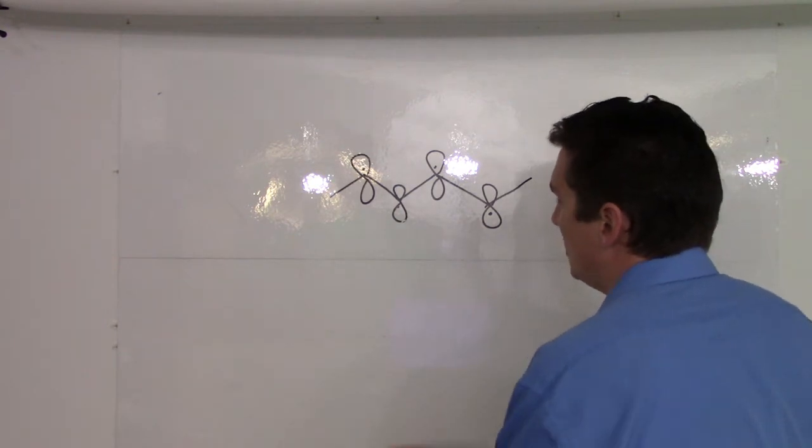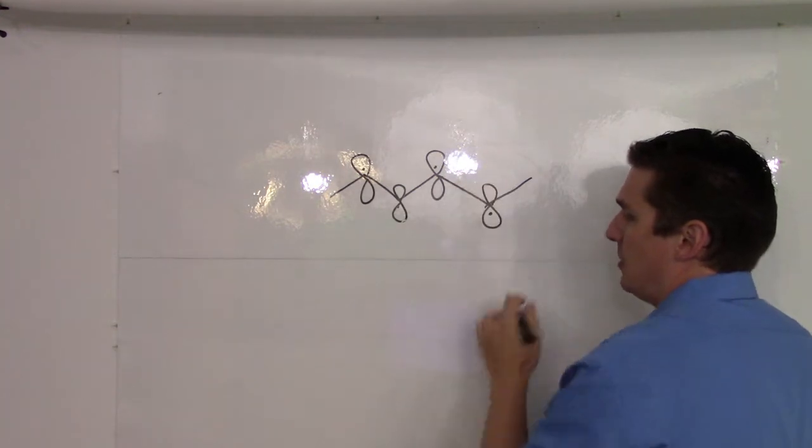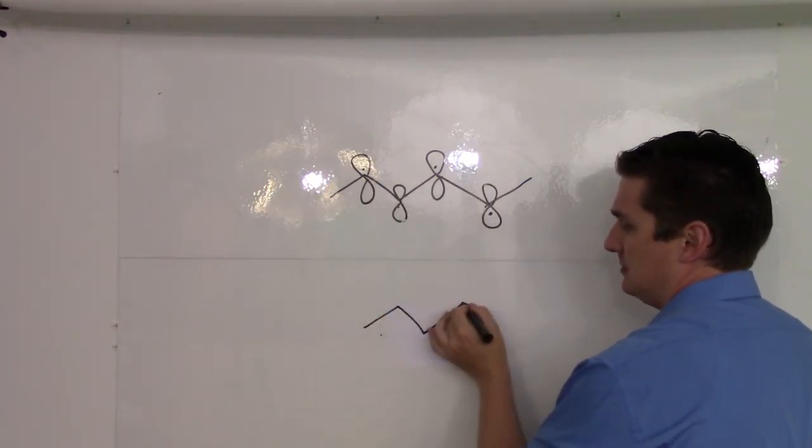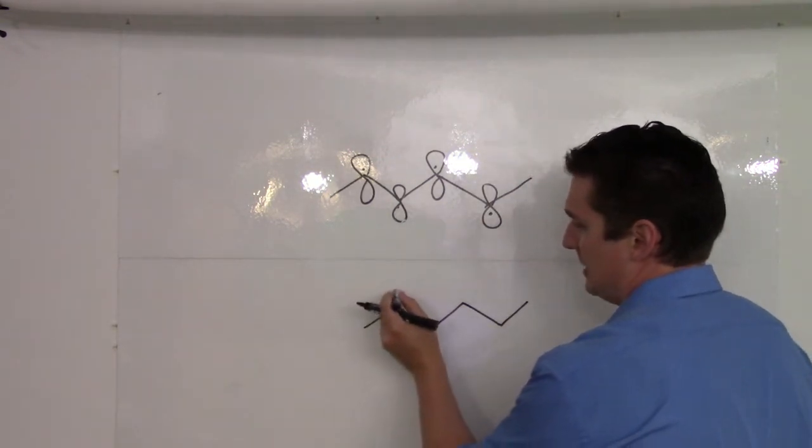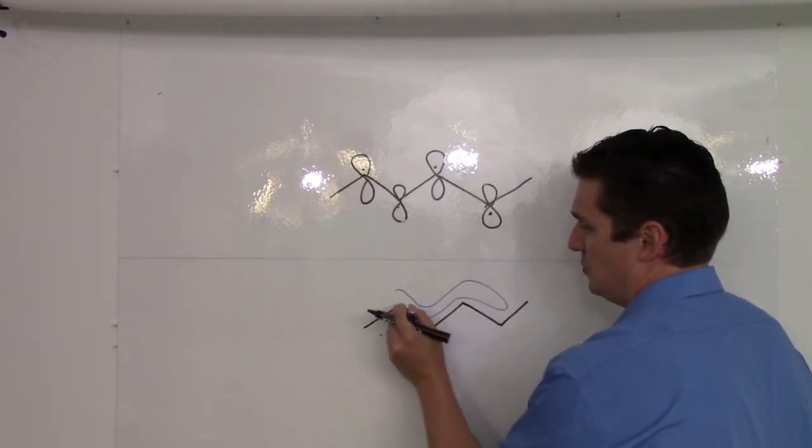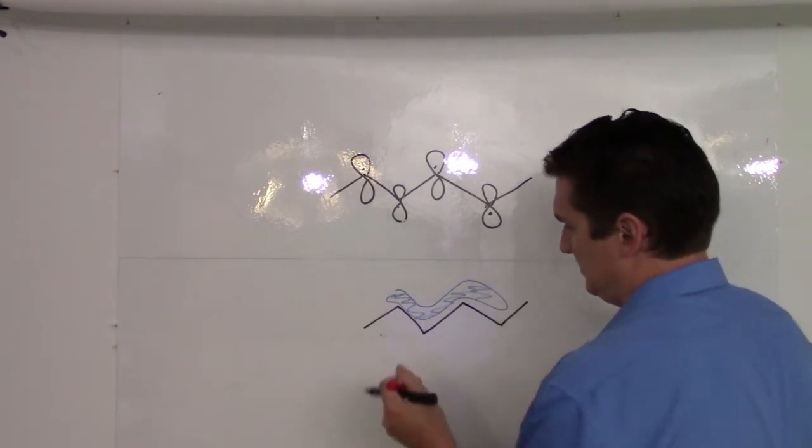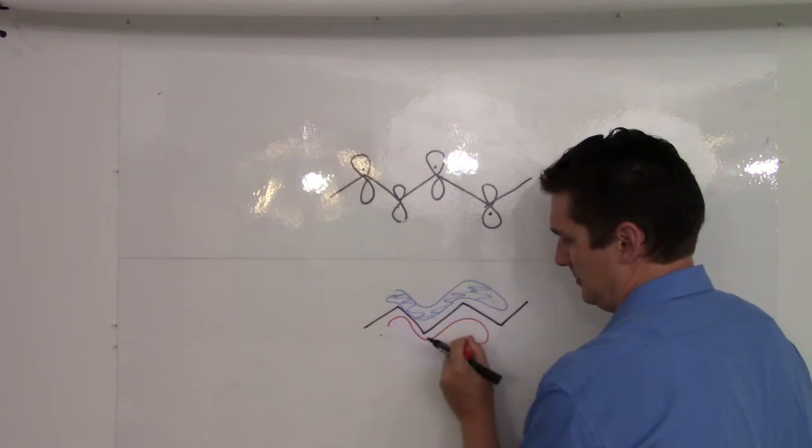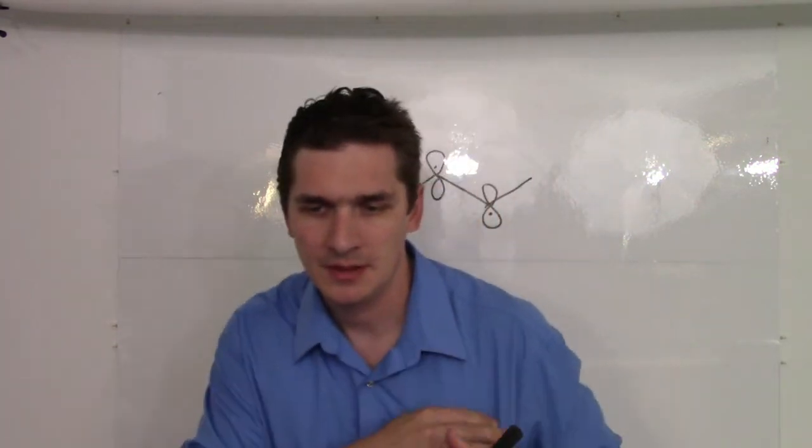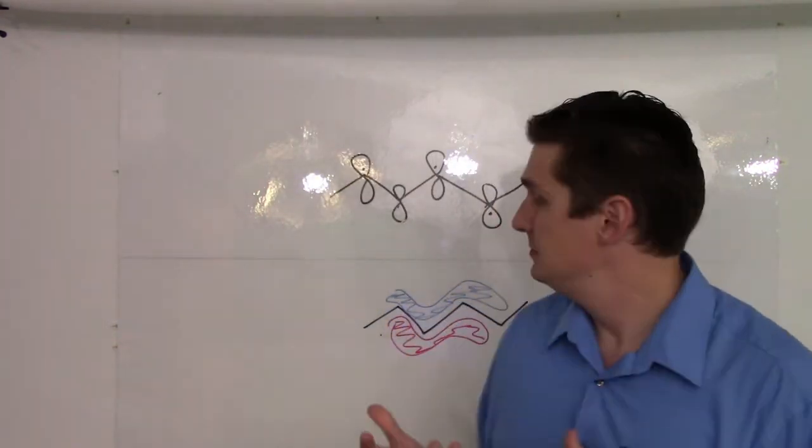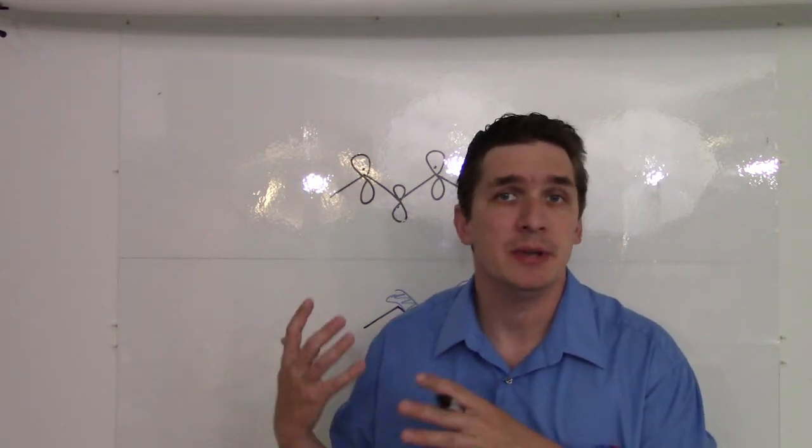So, our lowest energy orbital here is going to be the addition of all four. And if I were to draw that out, I would have something that looks sort of like this weird, long, snake-like orbital. So, this is the first molecular orbital predicted by molecular orbital theory based on these four.